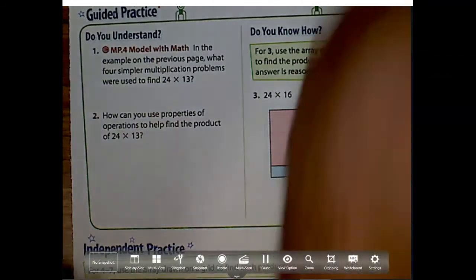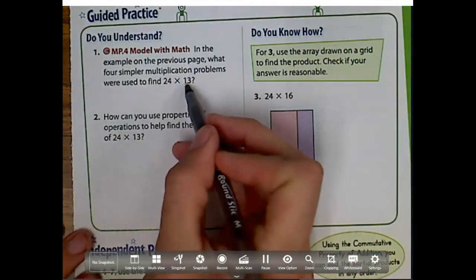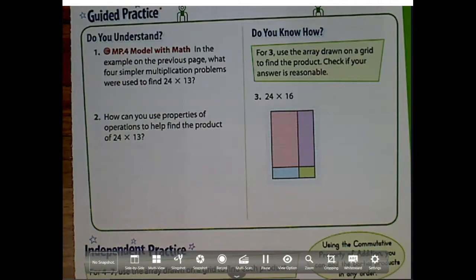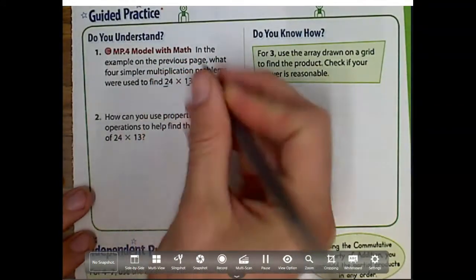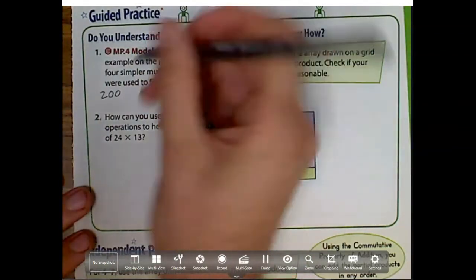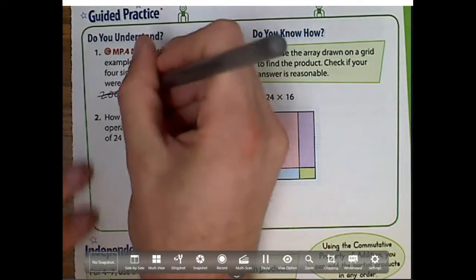Starting with number one, we have this problem right here. It says, in the example on the previous page, what four simpler multiplication problems were used to find 24 times 13? Well, if you remember, we had broken it up and we had done 20 times 10 because we're multiplying by those place values.